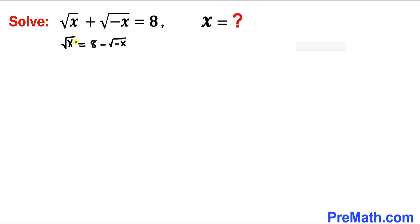Now let's go ahead and undo this square root on the left hand side. So I'm going to square both sides. On the left hand side this square and square root undo each other, so we ended up with x equals to.